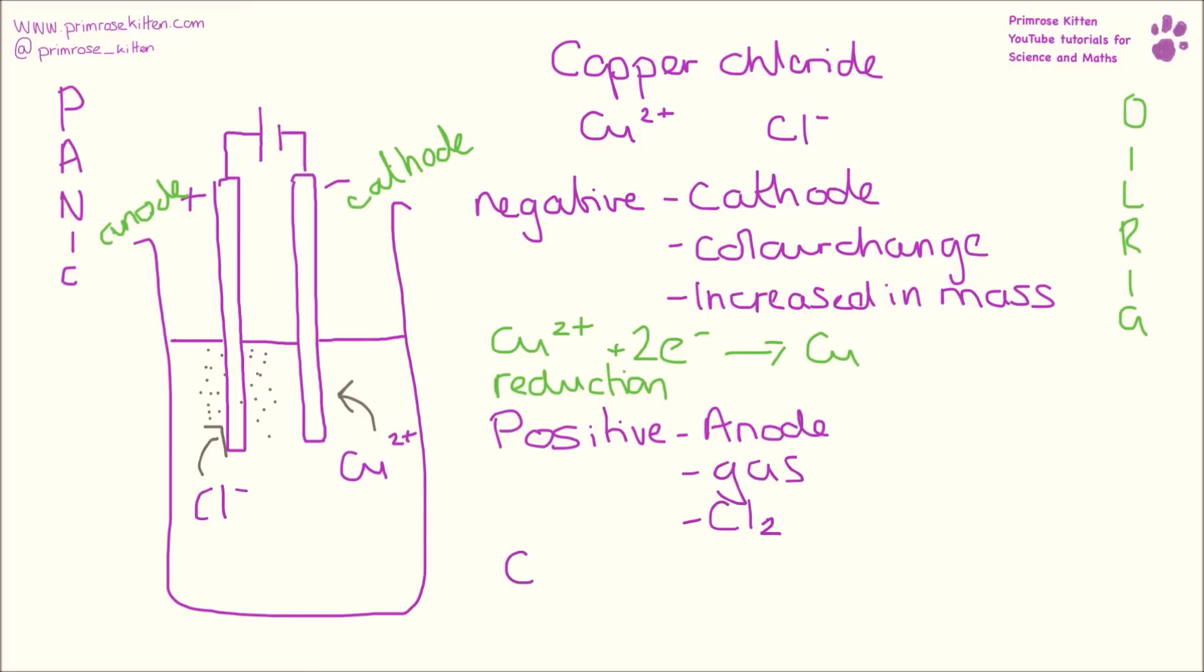And what we are going to have is chloride ions turning into chlorine gas. Now we have two chlorines on the right hand side, so we need two on the left hand side. We also need the fact that it is going to lose two electrons. Now here we are losing electrons, so it is oxidation.